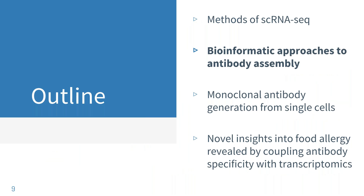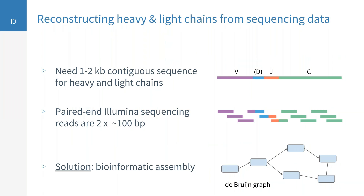That was a quick overview of single cell RNA sequencing, focusing on what makes it different for B cells: one being the isolation of the B cells, for which there are different modes, and two being which chemistries can and cannot be used for this cell type. Now I'd like to dig deeper into bioinformatic approaches to antibody assembly. For all single cell RNA-seq, you use similar tools for gene expression and splicing analysis, but for B cells and T cells in particular, you need to perform the additional step of bioinformatic sequence reconstruction.